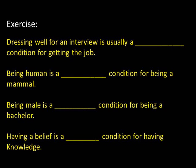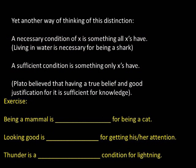Another slide offers an additional way of thinking about the distinction. In the exercise: being a mammal is a necessary condition for being a cat; looking good may be necessary, sufficient, or neither depending on context; and thunder is a sufficient condition for knowing that lightning is near.